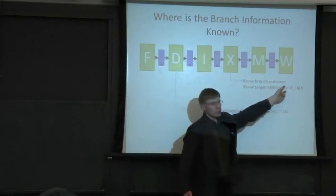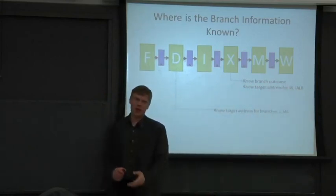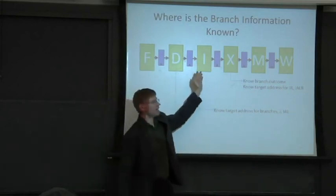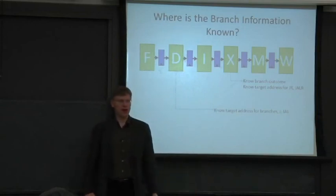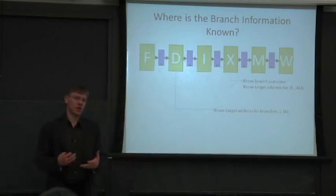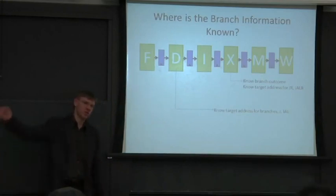In the execute stage, we know the branch outcome. We talked about a trick in MIPS where you can try to pull that forward a stage into decode by having a special comparator on the register file output, comparing it with zero. But that doesn't work for all branch types. If you have something like a branch equals where you're comparing two real registers, you have to wait for the full bypass.